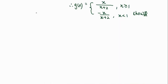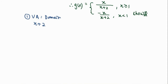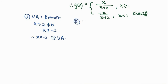We are going to discuss question B: determine the asymptotes and the point of discontinuity of this function g(x). For the first one, when we want to find the vertical asymptote, we find it from the domain, where the denominator cannot equal 0, so x cannot equal negative 2. Therefore, x equals negative 2 is a vertical asymptote.